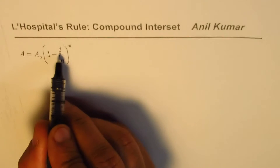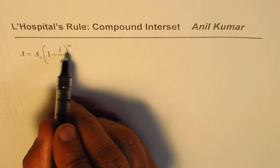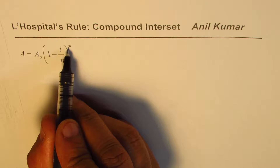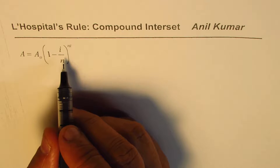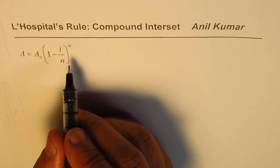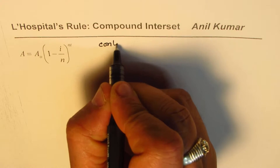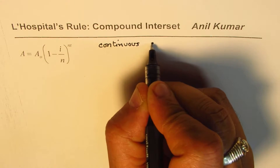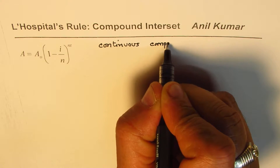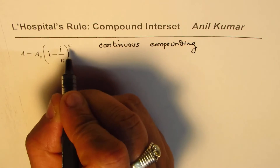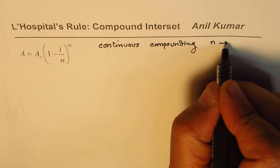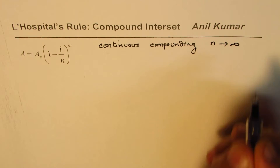That's the formula representing the investment after T years when investment is done at interest rate I over T years and N is the compounding number per year. Now the idea is: what if we make it continuous compounding? That is, when we say continuous compounding, N — the number of times compounding is done per year — is approaching infinity.